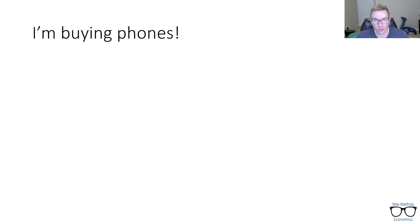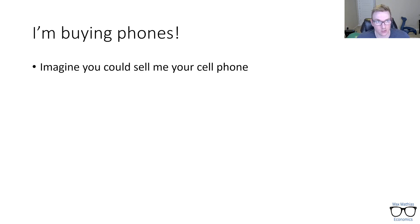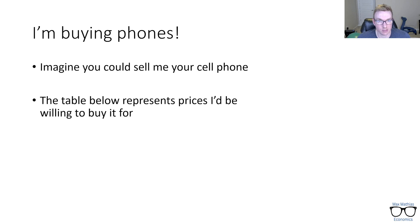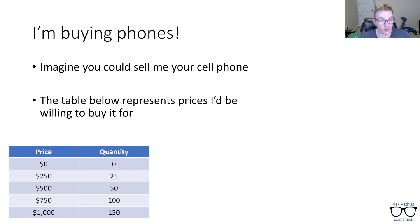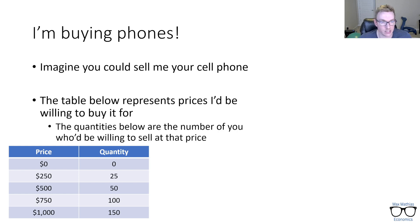Let's imagine I am able to, through my computer screen, buy all of your phones. If you could sell me your cell phone right now, I'm going to have a table that represents prices I'd be willing to buy it for. If I was in a classroom, I would be taking a poll of the students. I just made up a table full of numbers. If I offered you $0 for your phone, I assume no one would want to sell it to me. If I paid $250, let's say 25 of you would be willing to sell. At $500, 50. Those quantities in the right-hand column are the number of you willing to sell at that particular price.